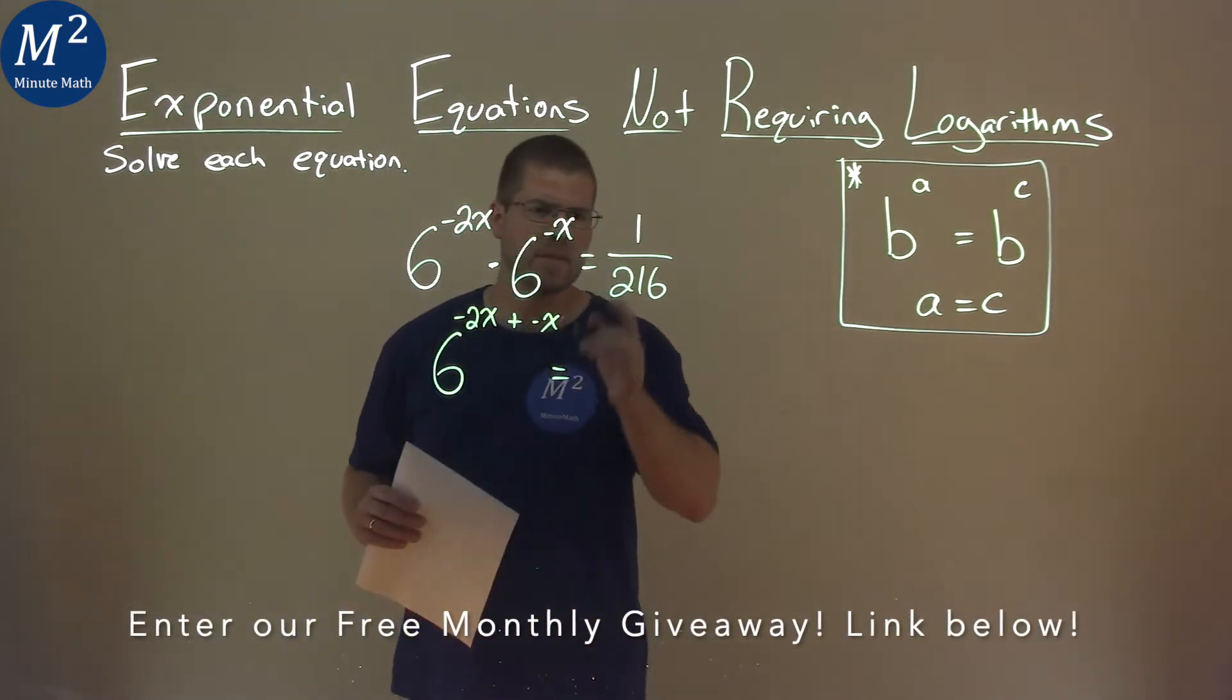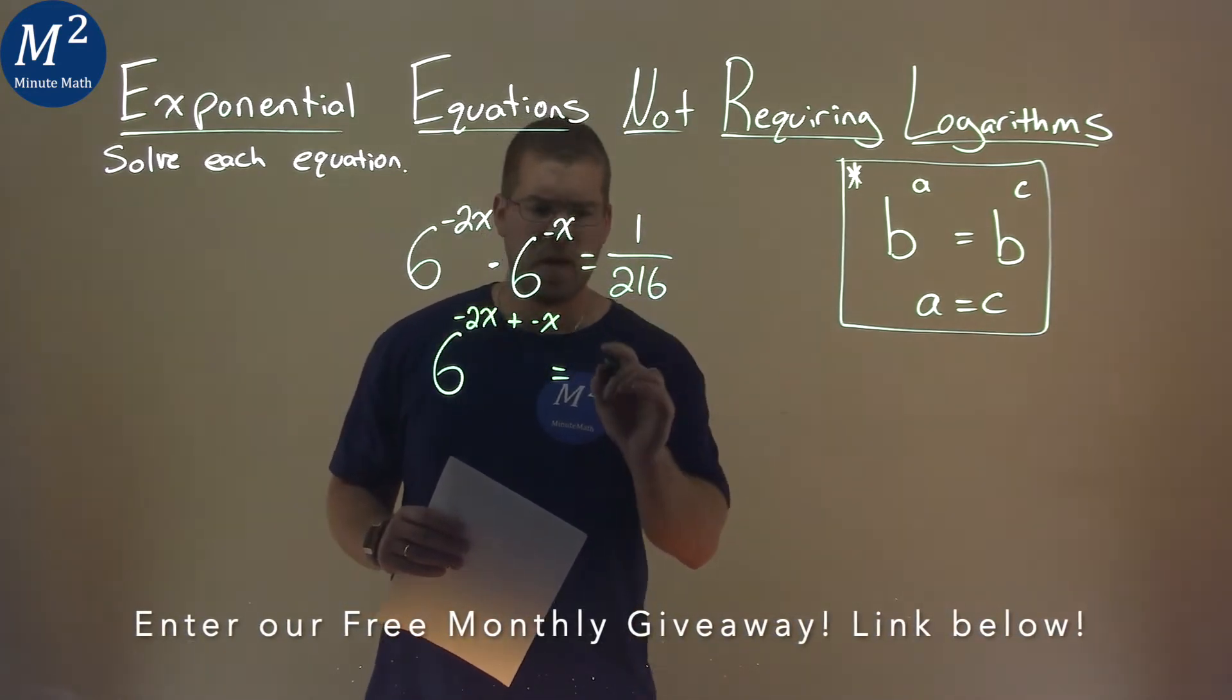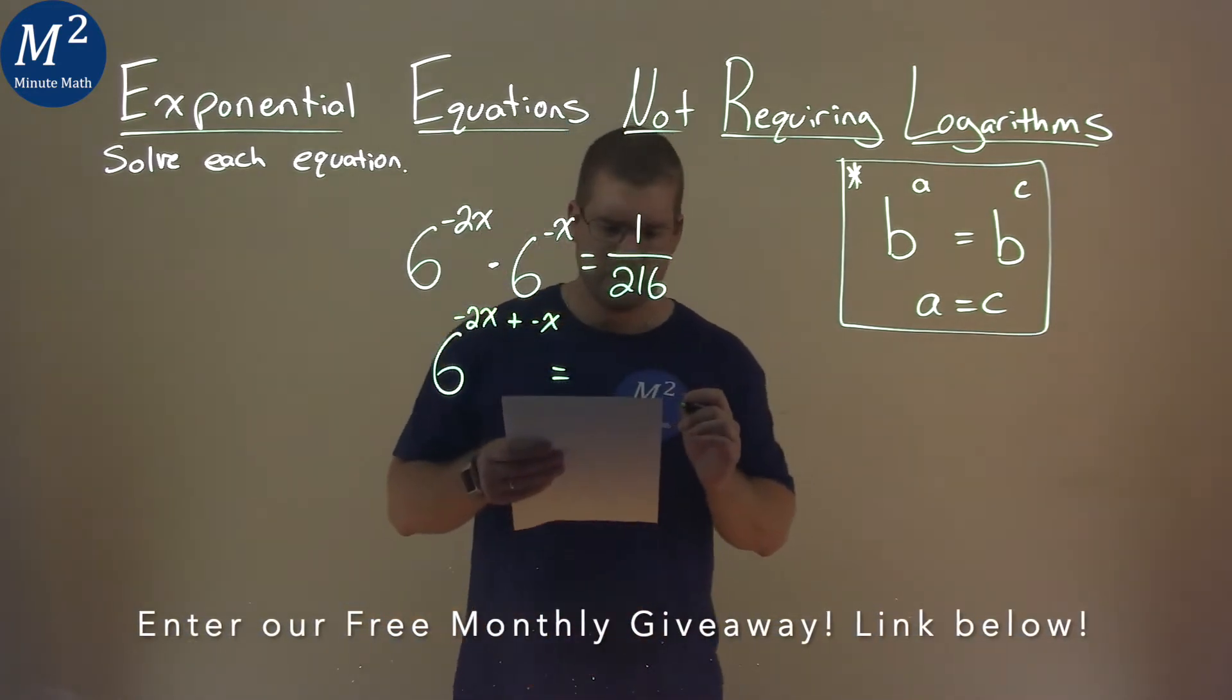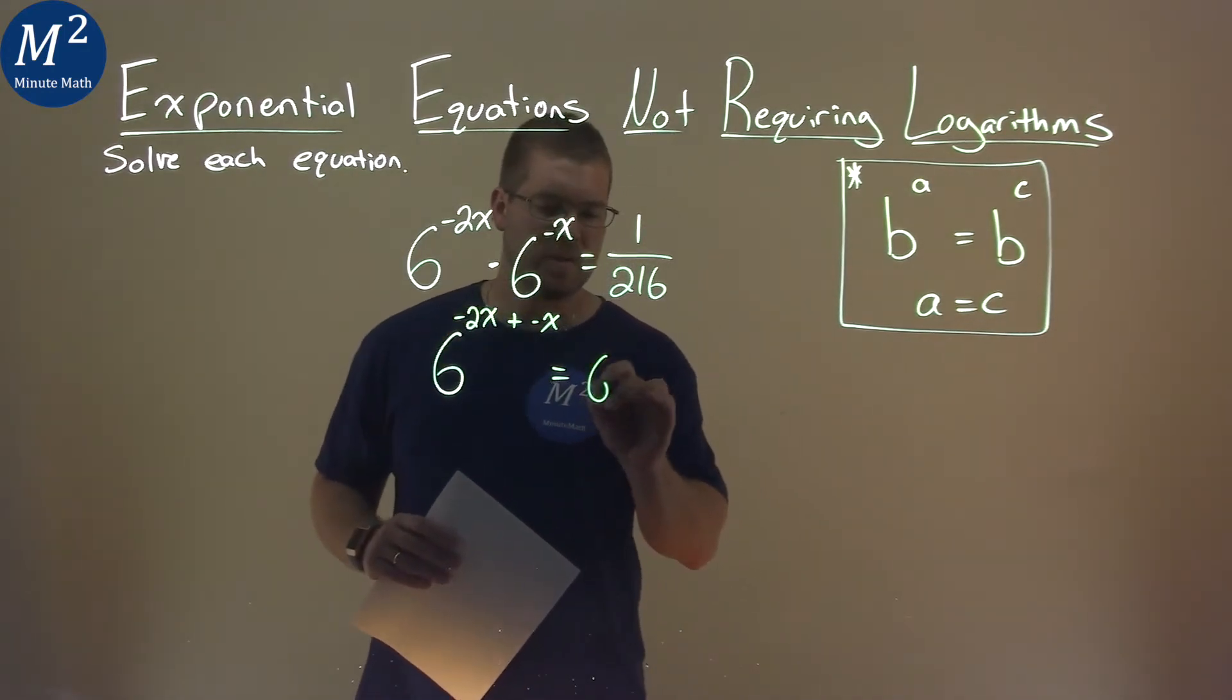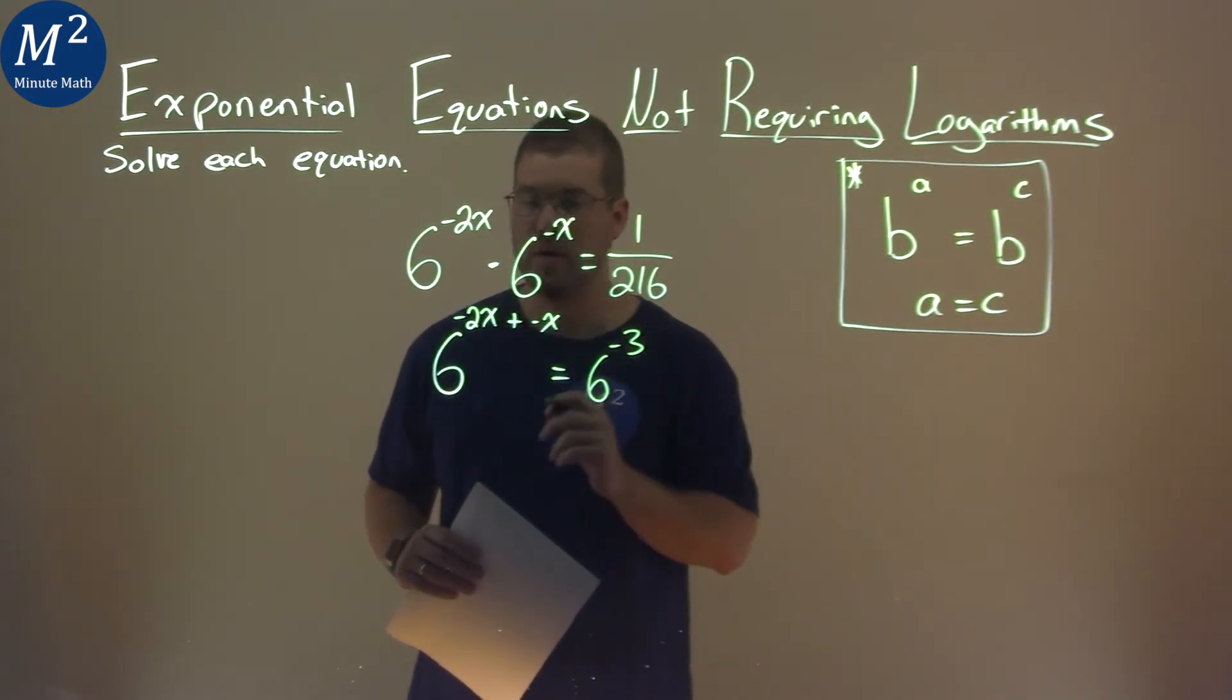Now, the right-hand side, I'm going to see if I can rewrite this to be something with a 6 with an exponent. 6 to the 3rd power is 216, so 6 to the negative 3rd power is equal to 1 over 216.